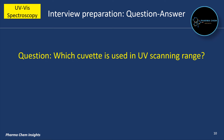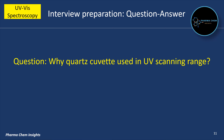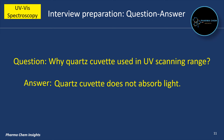Which cuvette is used in the UV scanning range? Quartz cuvette is used in the UV scanning range. Why is quartz cuvette used? Because quartz cuvette does not absorb light, that is why it is used in the UV scanning range.